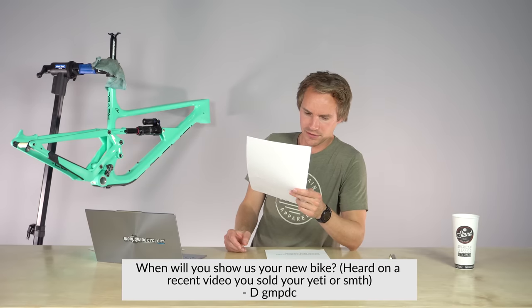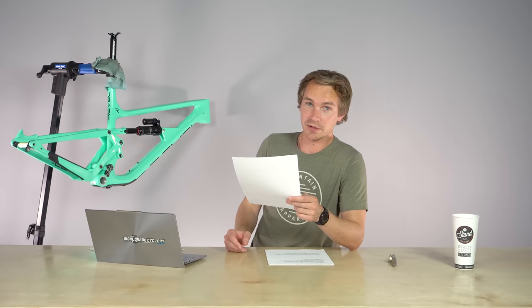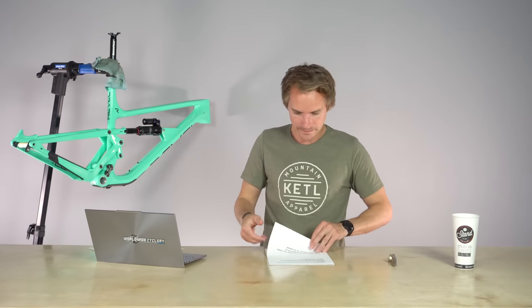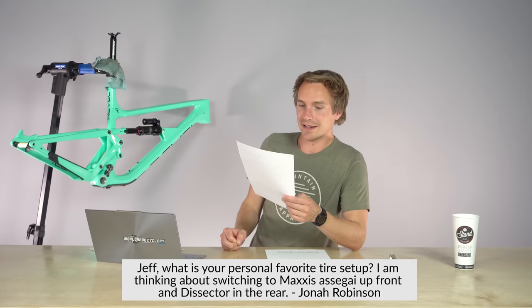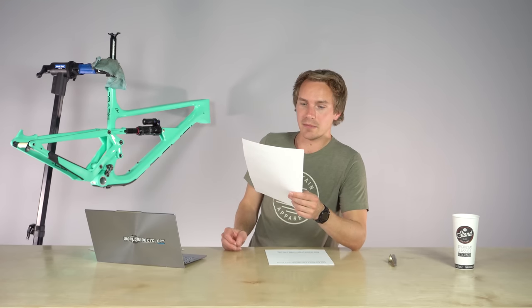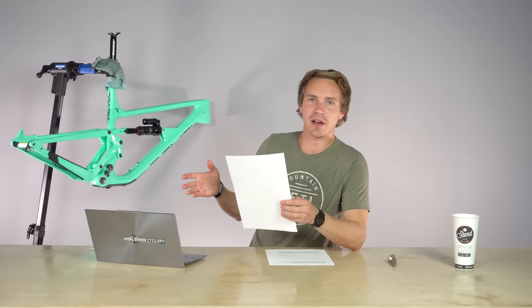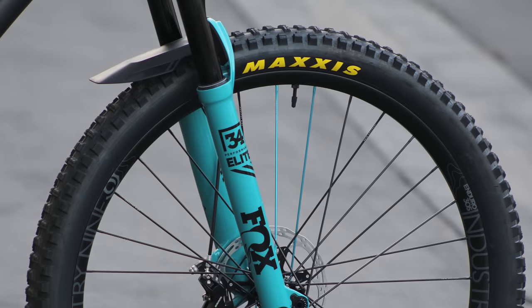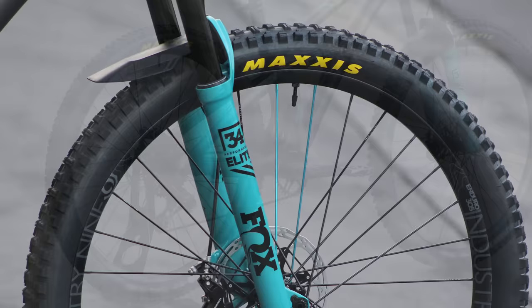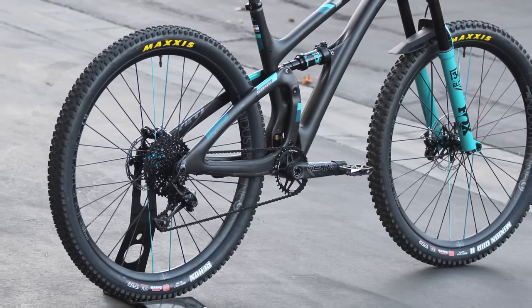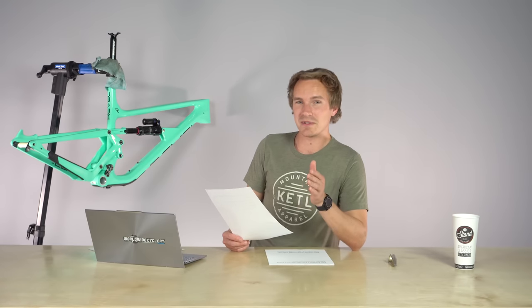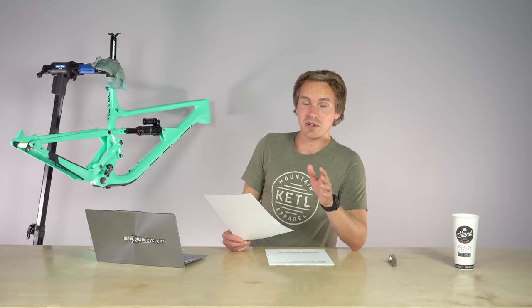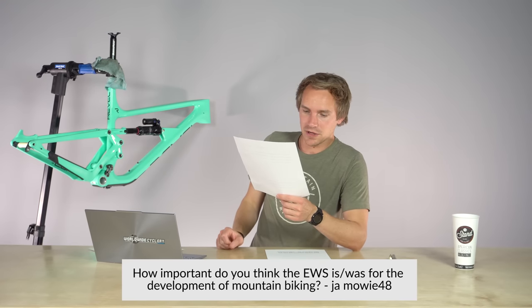When will you show us your new bike, Jeff? Heard on a recent video you sold your Yeti or something. I do have a new bike coming. And there's going to be multiple YouTube videos about it. And it's going to be freaking amazing! What is your personal favorite tire setup? I'm thinking about switching to Maxxis Assegai up front and Maxxis Dissector in the rear. That is a phenomenal tire setup. My personal favorite, I guess I'll give it to you for my trail bike, which I ride most often. I usually run a 29x2.4 Maxxis Minion DHR2 in the front. And then I run a 2.4 Rekon in the back. I'm going to try out the Dissector up front, paired with that Rekon in the back, because I think that'll be a pretty interesting setup.